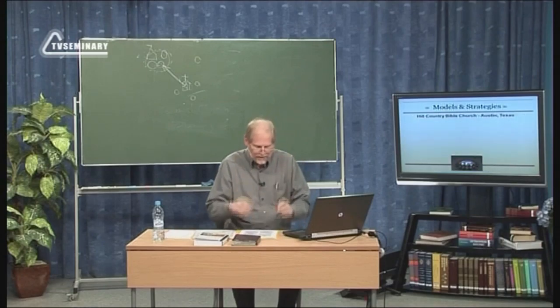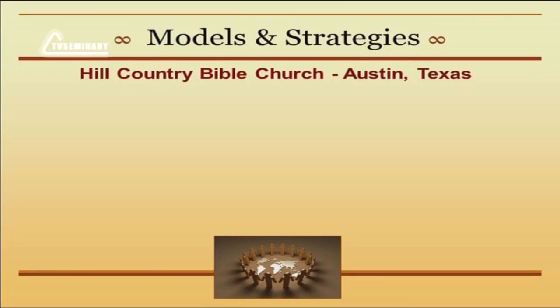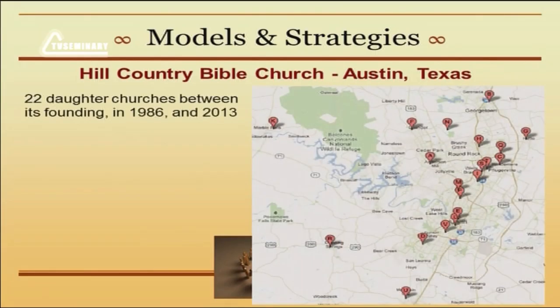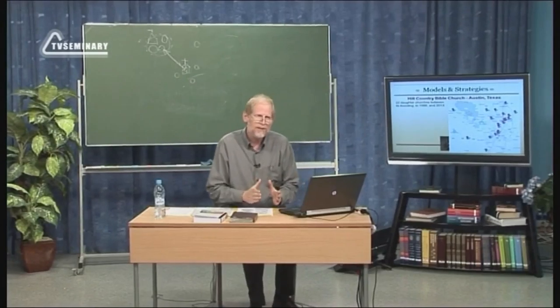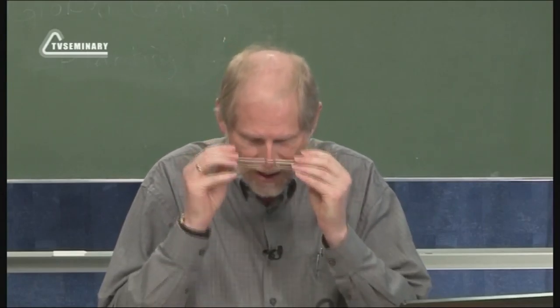Let's go into some detail about how one church in America has done this in a very effective way — Hill Country Bible Church in Austin, Texas. This map from their 2013 webpage shows all the daughter churches they've started since 1986 — 22 daughter churches. They've developed a system where they're actually training their own church planters in what they call a church planting residency in the home church. Several larger churches in America are doing this, with programs that often go for a whole year.